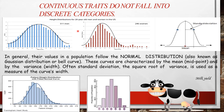Continuous traits do not fall into discrete categories. In general, their values in a population follow a normal distribution, also known as a Gaussian distribution or bell curve. This curve is characterized by a mean, which is the midpoint, and the variance, which represents the width. The standard deviation — the square root of variance — is used to measure the curve width.